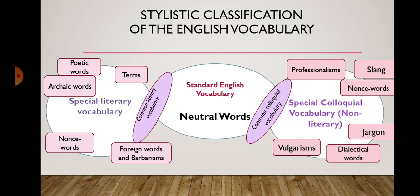In accordance with the division of language into literary and colloquial, we may represent the whole word stock of the English language as divided into three main layers: the literary layer, the neutral layer, and the colloquial layer. The literary and colloquial layers contain subgroups, each sharing a property with all subgroups within the layer. The aspect of the literary layer is its markedly bookish character, making it stable. The aspect of the colloquial layer is its lively spoken character, making it unstable and fleeting.